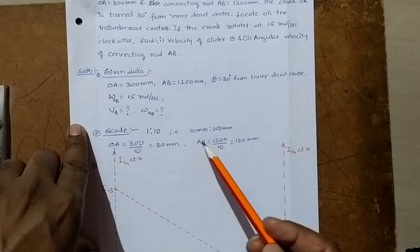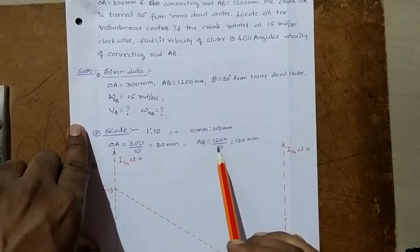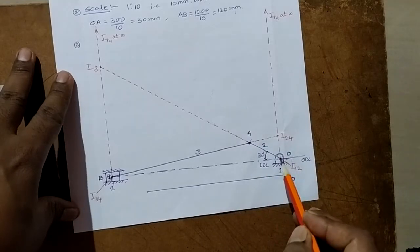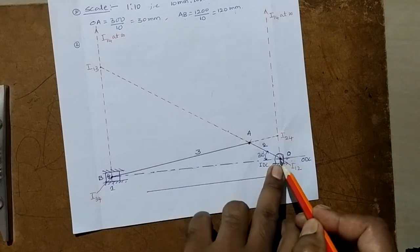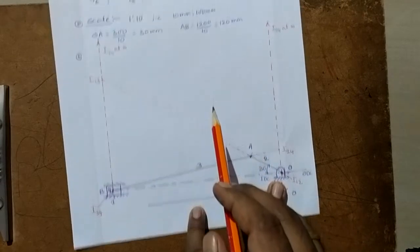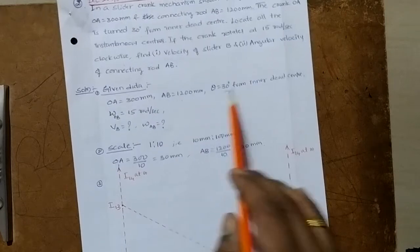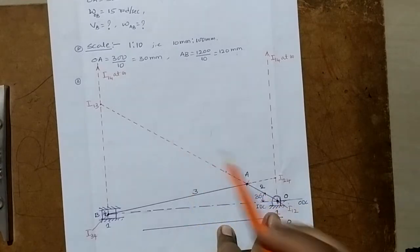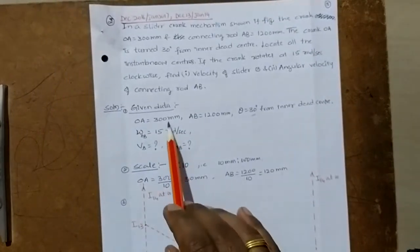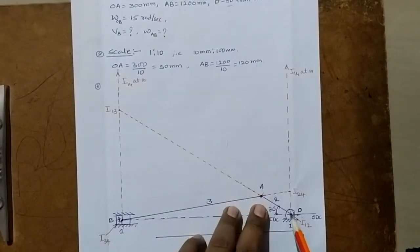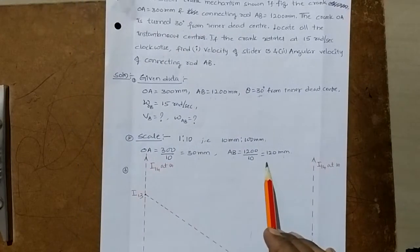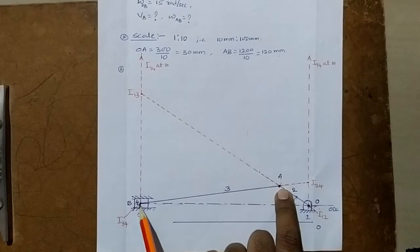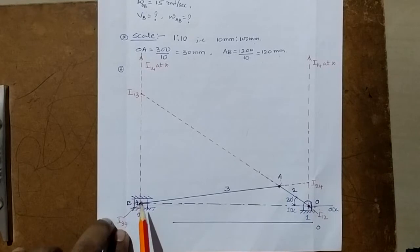I am going to draw the single slider crank mechanism with the help of the given lengths. First, draw one horizontal line. Then mark one point on this horizontal line called O. From O, keep the protractor and take 30 degrees — the angle given from the inner dead center. This is the inner dead center and this is the outer dead center. Take 30 degrees from here. OA length, according to scale, is 30 mm. Take 30 mm and cut it to get point A. Then AB is 120 mm. Measure with the compass 120 mm from A and cut the horizontal line to get point B.